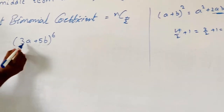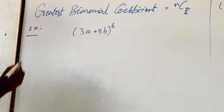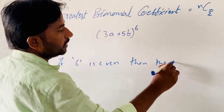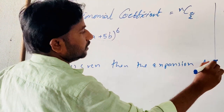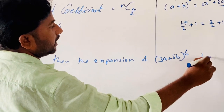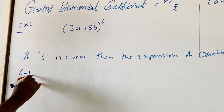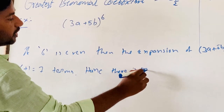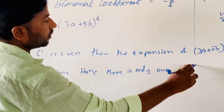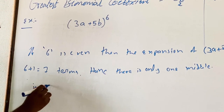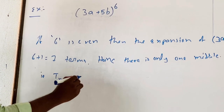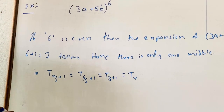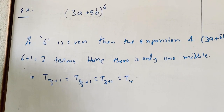Now find the middle term of (3a + 5b)^6. Here 6 is even, so the expansion of (3a + 5b)^6 has 6 + 1, that is equal to 7 terms. Hence there is only one middle term, which is T(n/2 + 1), that is T(6/2 + 1) = T(3+1) = T4. So T4 is the middle term of the expansion of (3a + 5b)^6.